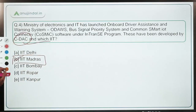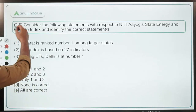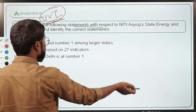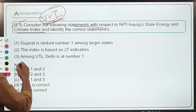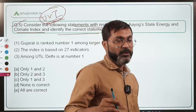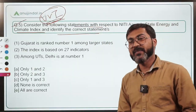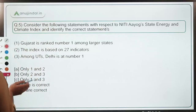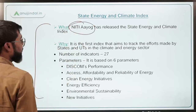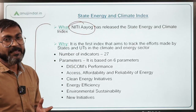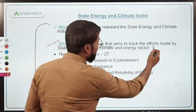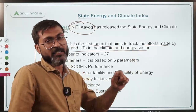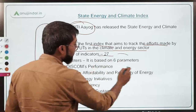The last question is very important and has high chances of appearing in exams: consider the following statements with respect to the NITI Aayog State Energy and Climate Index (SECI). This is the first-of-its-kind index that measures the performance of states and UTs in the areas of climate and energy. This index has been released by NITI Aayog and is based on 27 indicators and six parameters.